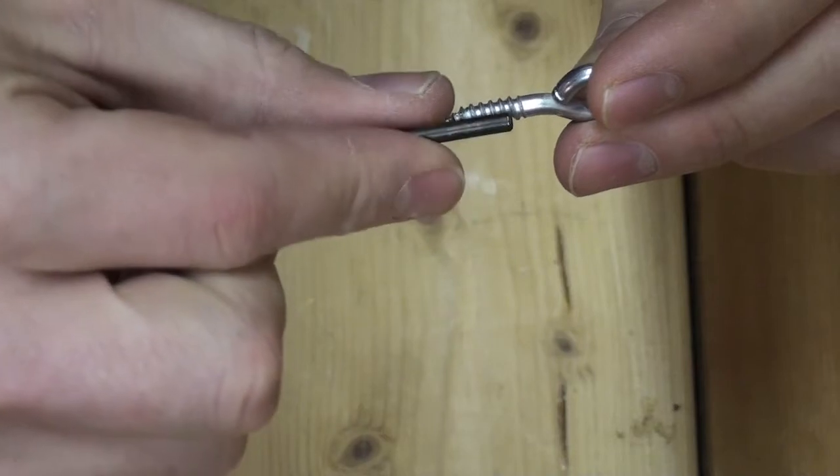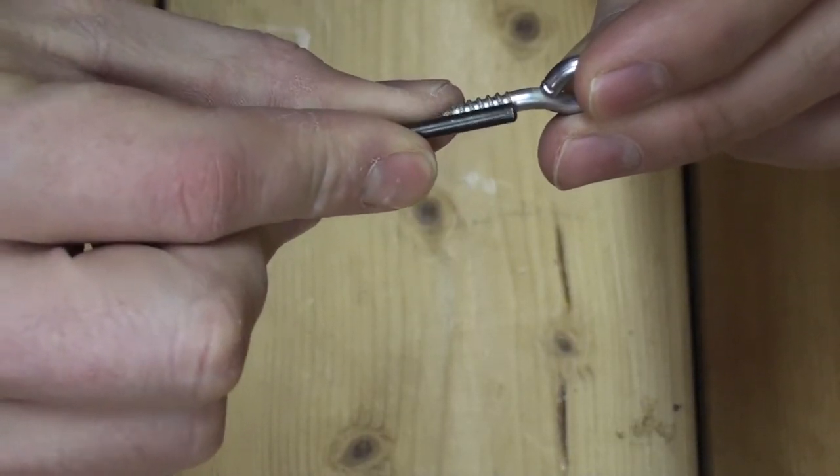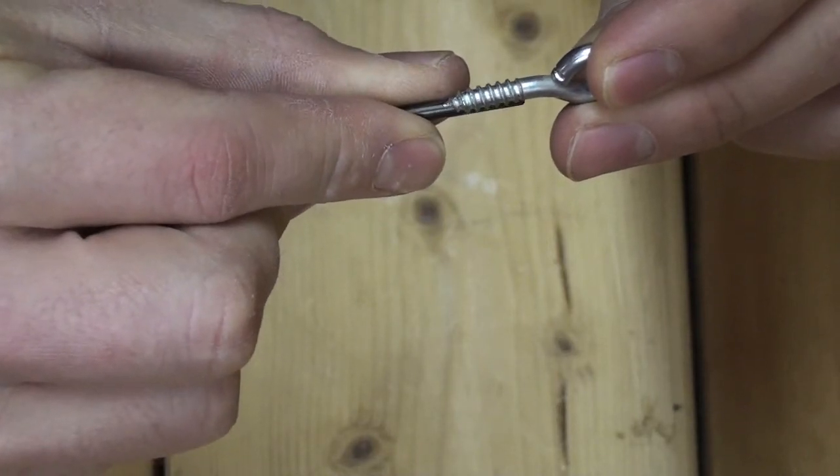if you are unsure of the size drill bit required, you will need to select a bit that covers the center portion of your eye hook but does not cover the metal threads.